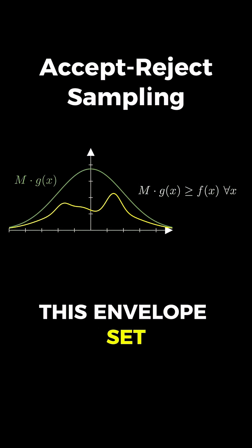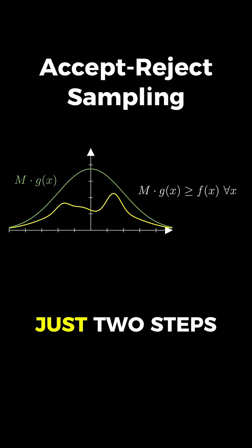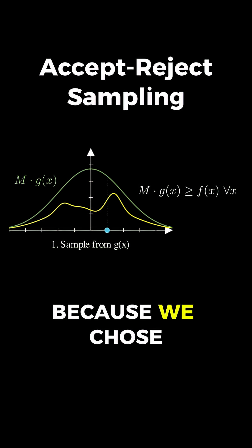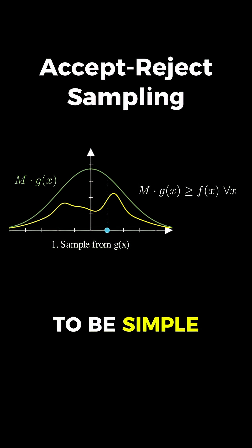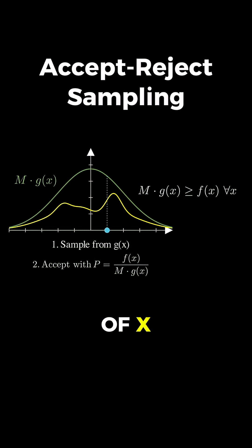Once we have this envelope set up, the algorithm is beautifully simple and consists of just two steps that we repeat. First, we generate a sample x from our proposal distribution g, which is easy because we chose g specifically to be simple to sample from. And second, we accept this sample with probability equal to f of x divided by m times g of x. And if we reject it, we just try again with a new sample.